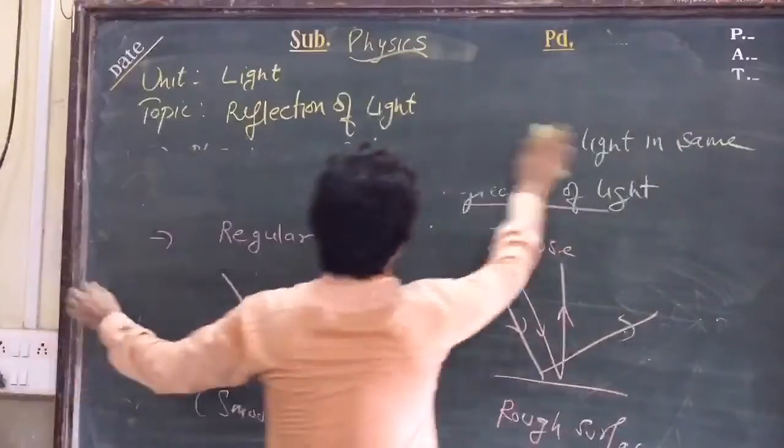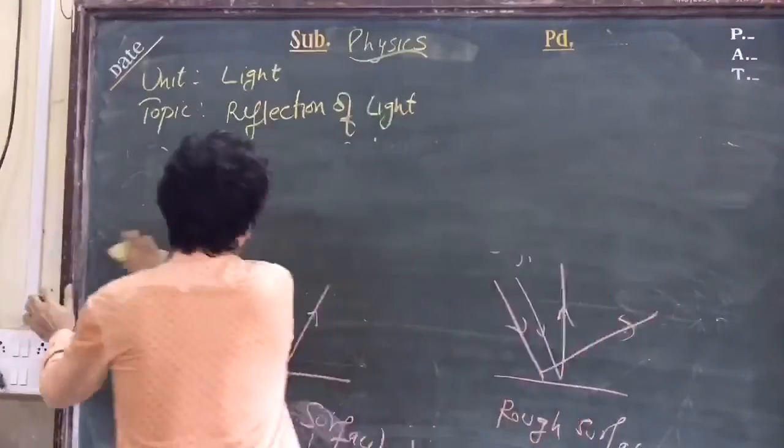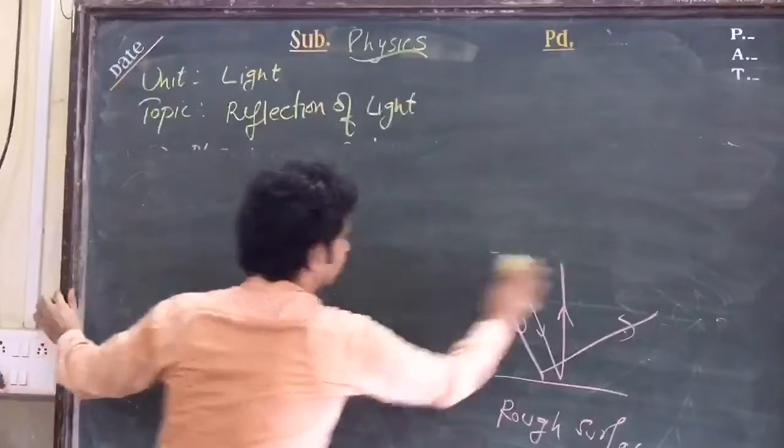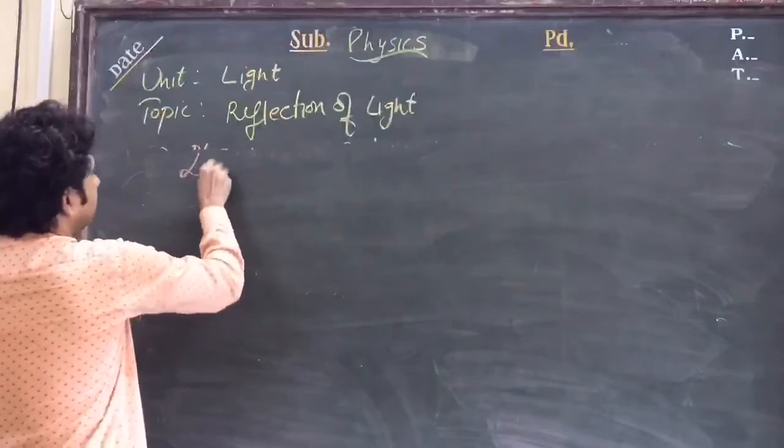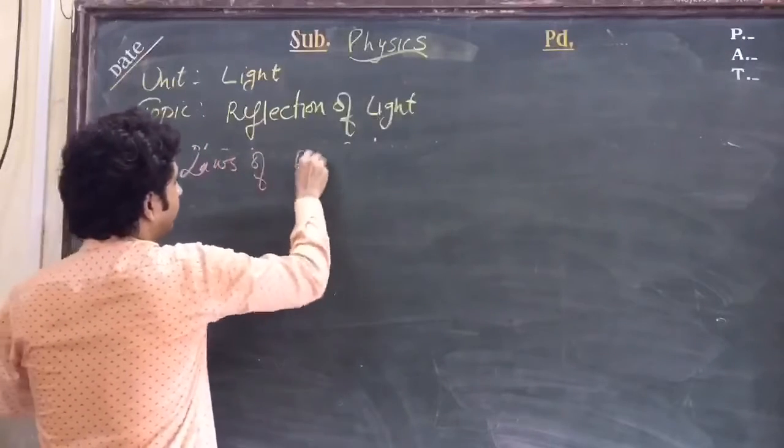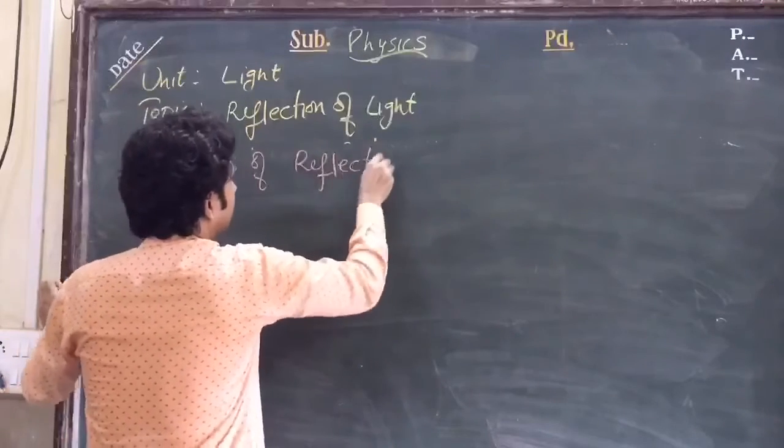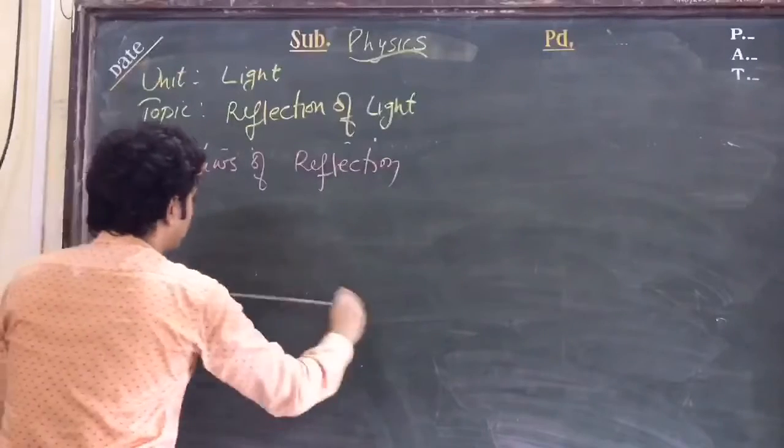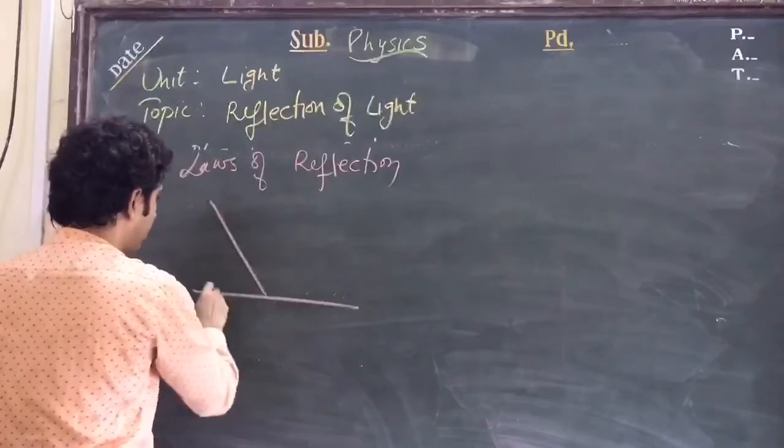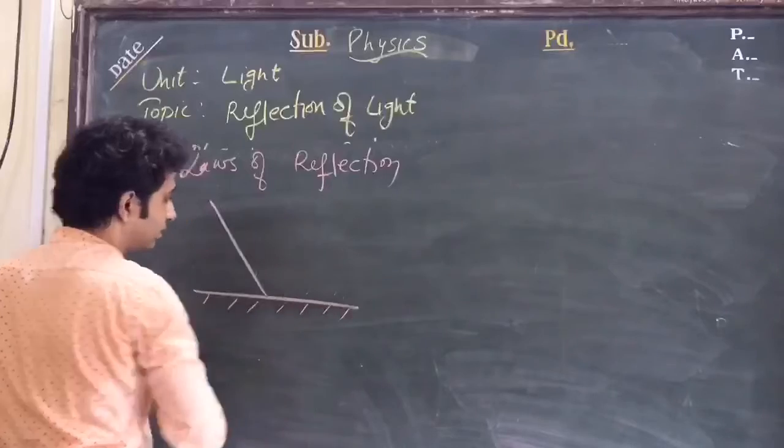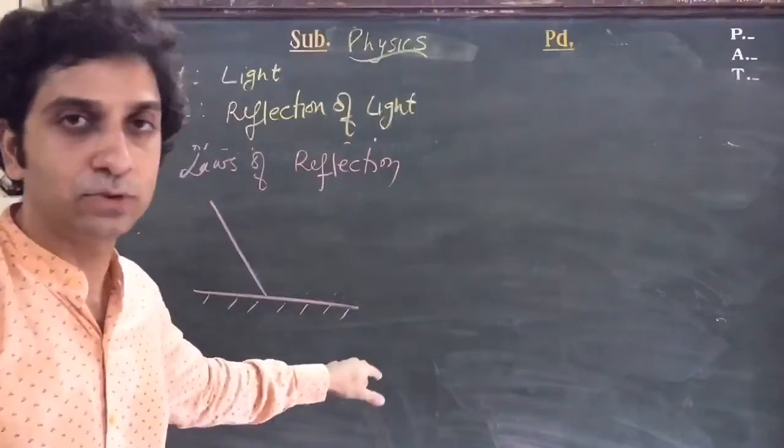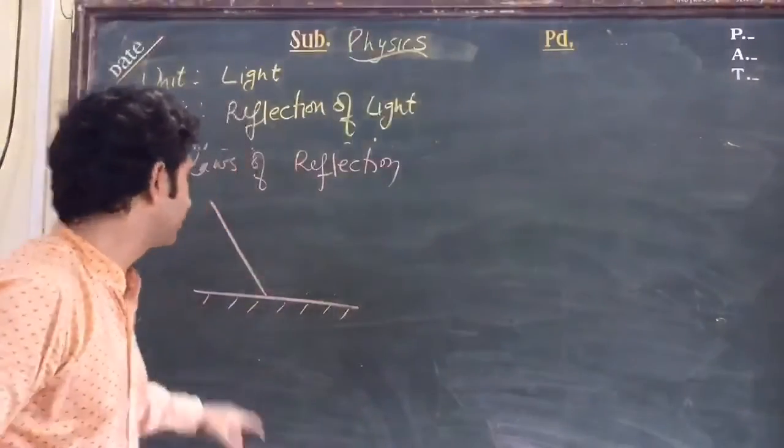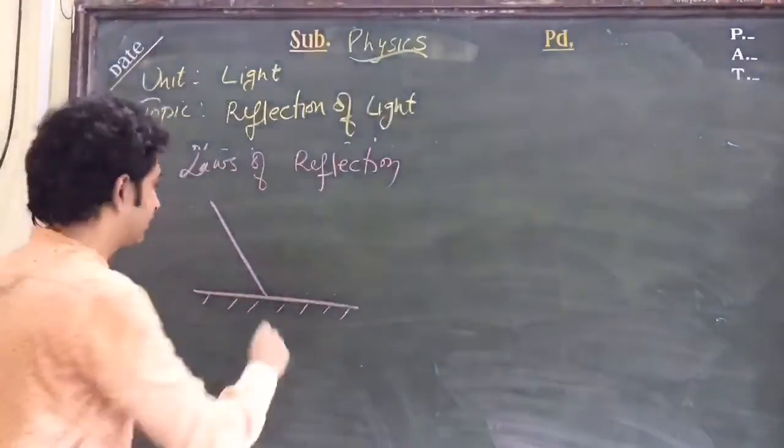Next are the two laws of reflection. Let me represent the mirror - I'll mark it with lines to show that it's a polished surface, a reflecting surface.